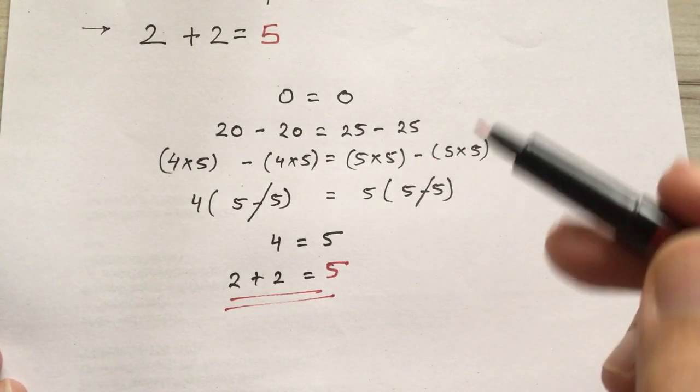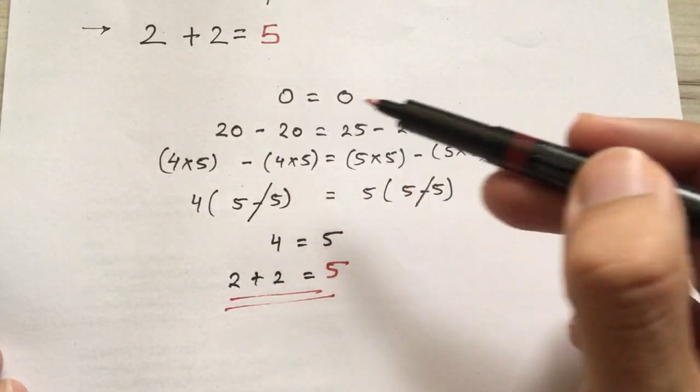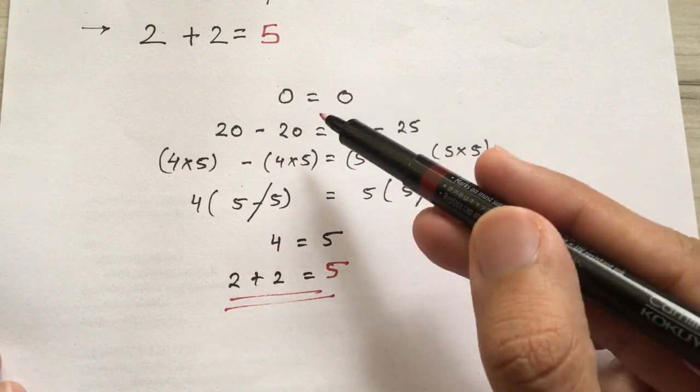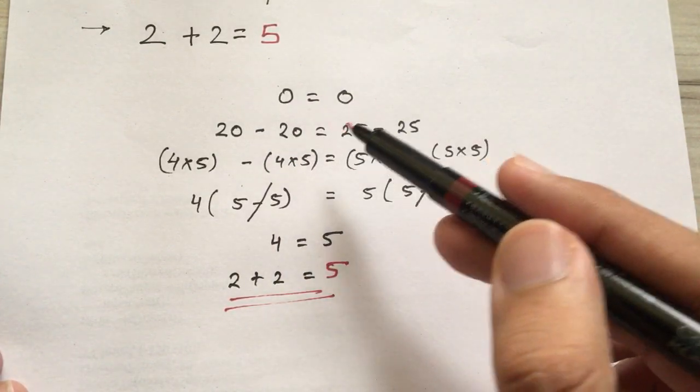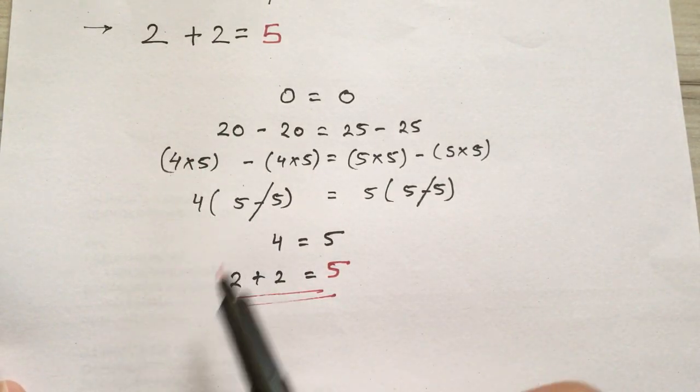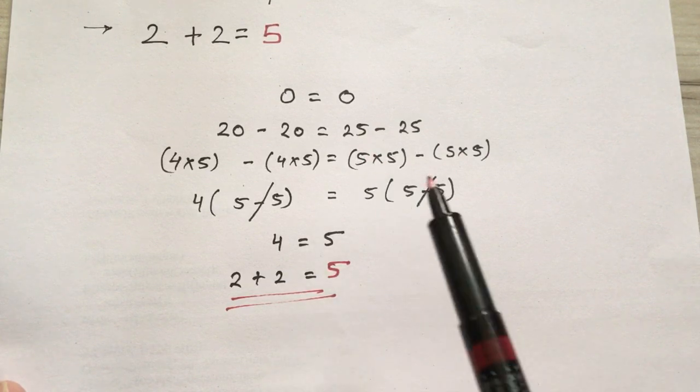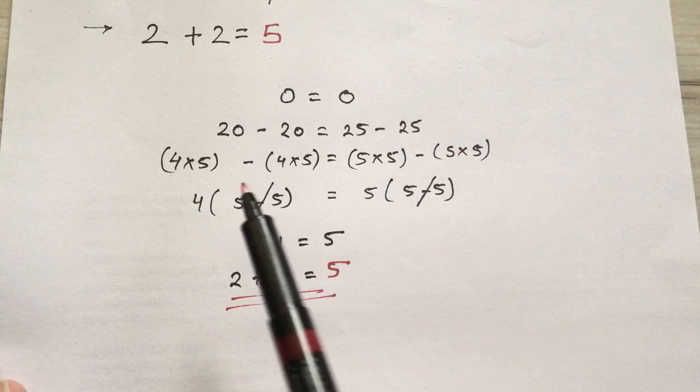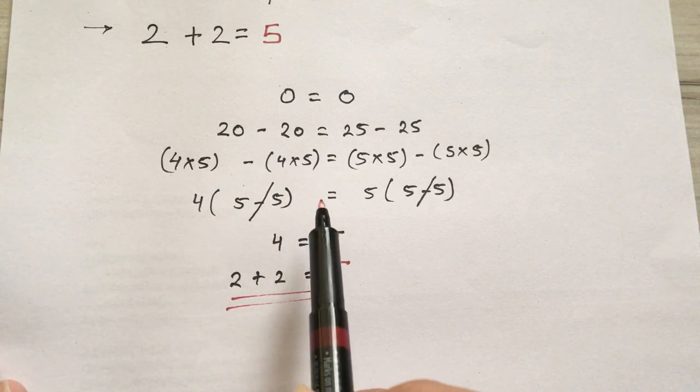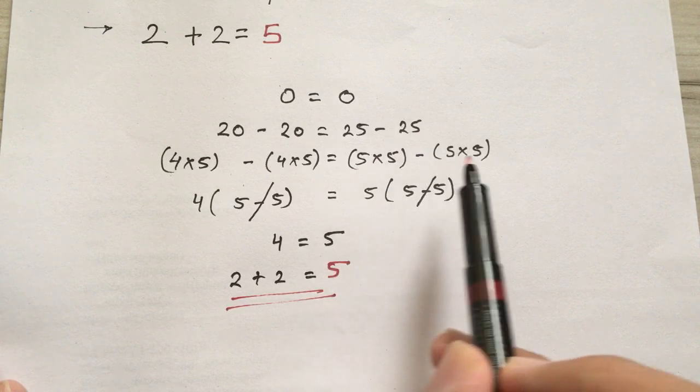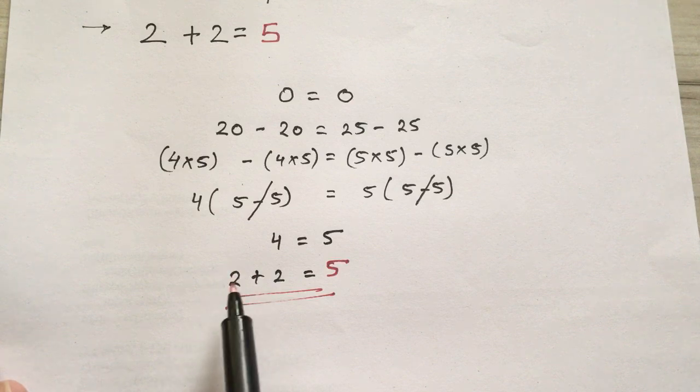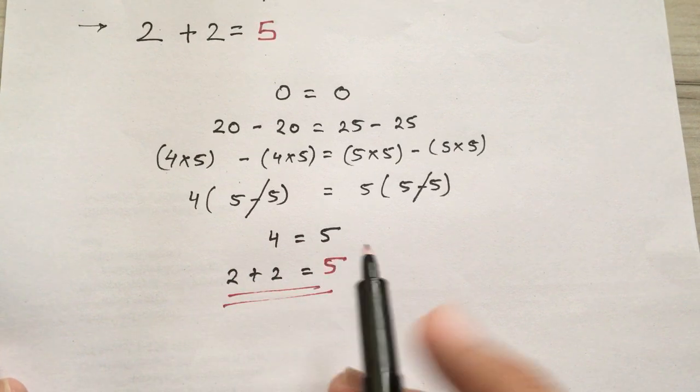So give me the best answer where I have made a mistake here. First we took the LHS equal to RHS as 0 equals 0. Then we took 20 minus 20, which is the same as 0, equals 25 minus 25 as 0, no problem. Then we just differentiated it into smaller parts: 4 times 5, 4 times 5, 5 times 5, 5 times 5, no problem till yet. And we took common, no mathematical error. We took 4 common out of it with 5 minus 5, and 5 common out of these brackets with 5 minus 5. And later on we got 4 equals 5, and 4 we have written as 2 plus 2 equals 5.